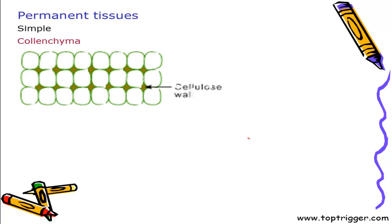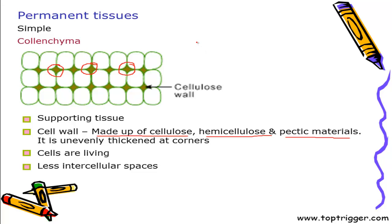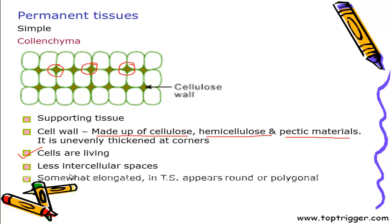Let's have a look at colenchyma. In case of colenchyma tissue, the cell wall is made up of cellulose but they have a deposition of hemicellulose and pectic material. The most diagnostic feature is that these cells have thickening at the corners of the cell — they are unevenly thickened at the corners. Cells are living and have relatively lesser intercellular spaces compared to parenchyma. Cells are somewhat elongated and in transverse section they may appear round or polygonal.